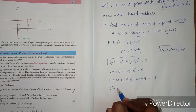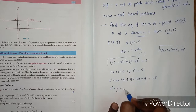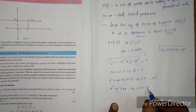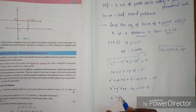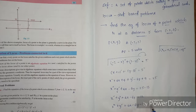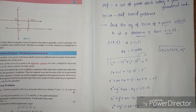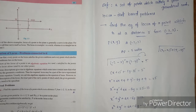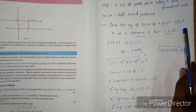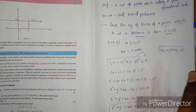So x² + y² + 4x - 6y + 4 + 9 = 25, that is x² + y² + 4x - 6y + 13 = 25, which gives x² + y² + 4x - 6y = 12, or x² + y² + 4x - 6y - 12 = 0. This is the locus for the given geometrical condition — the locus of a point which is at a distance of 5 from (-2, 3).